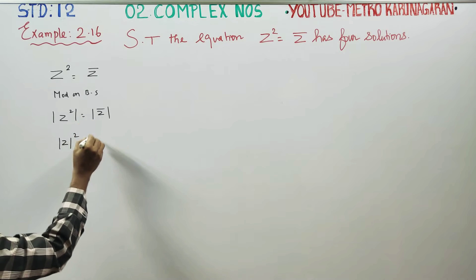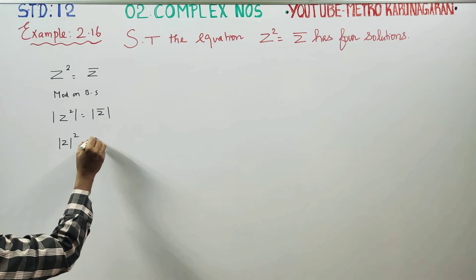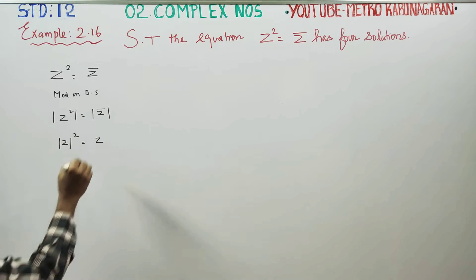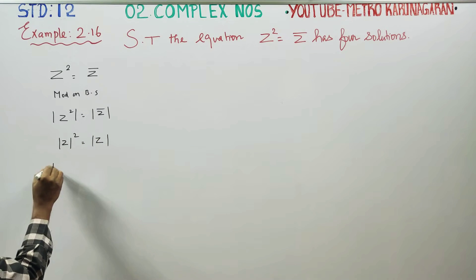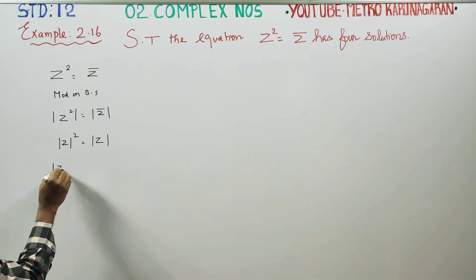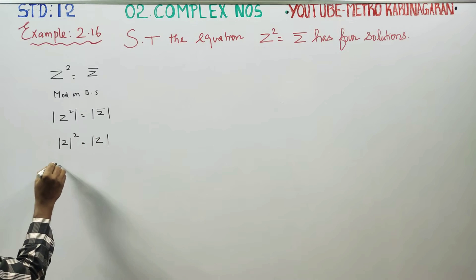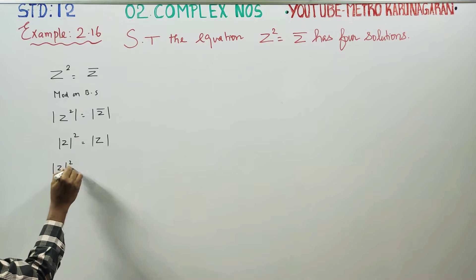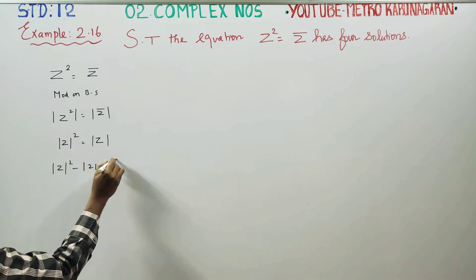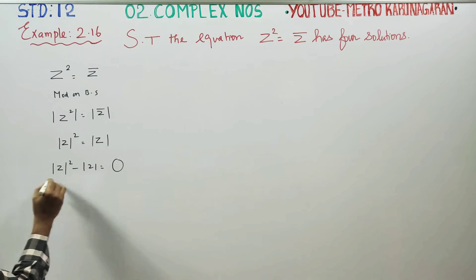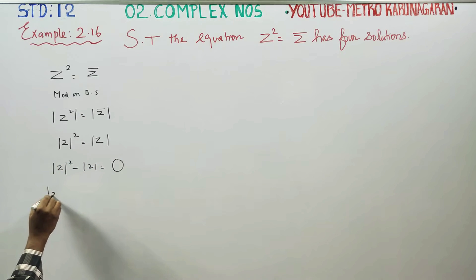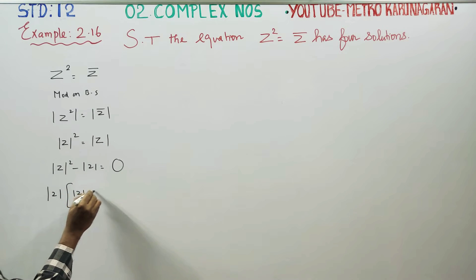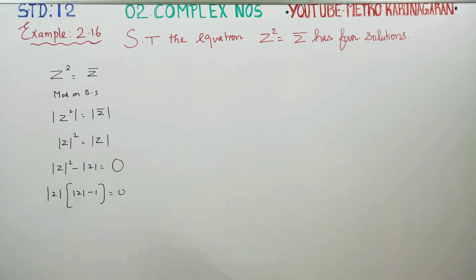Since Z-conjugate gives modulus of Z directly, we have |Z|² equals |Z|. So modulus of Z whole square minus modulus of Z is equal to 0. Taking modulus of Z common, we get modulus of Z times (modulus of Z minus 1) is equal to 0.